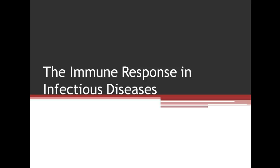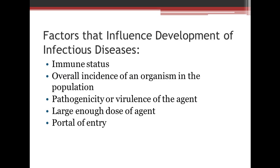This is the section on the Immune Response in Infectious Diseases. Factors that influence development of infectious diseases include the immune status of the person who has developed the disease, overall incidence of the organism in the population, the pathogenicity or virulence of the agent — meaning how strong it is and its ability to make you sick — whether there is a large enough dose of that agent to make you sick, and the portal of entry, which is how it enters your body.